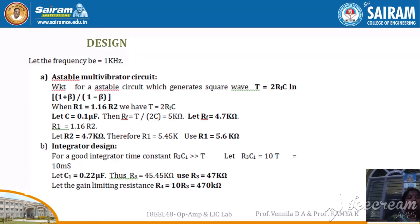This is the design. We are going to design for 1 kHz frequency. The astable multivibrator circuit design: the astable multivibrator generates a square waveform where T equals 2 Rf C ln of (1 + β) / (1 − β). When R1 equals 1.16 R2, we have T equal to 2 times Rf times C. We choose capacitance value 0.1 microfarad and Rf will be 4.7 kilo ohm.